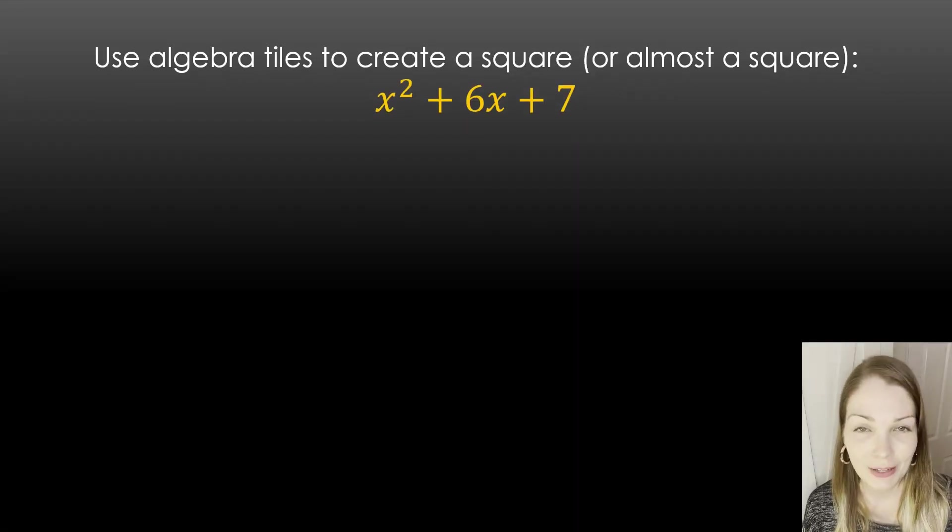All right, let's try this. Try to make a square out of x squared plus 6x plus 7. May not be perfect, but try to make it a square. You can pause here and I'll go ahead and show it now.